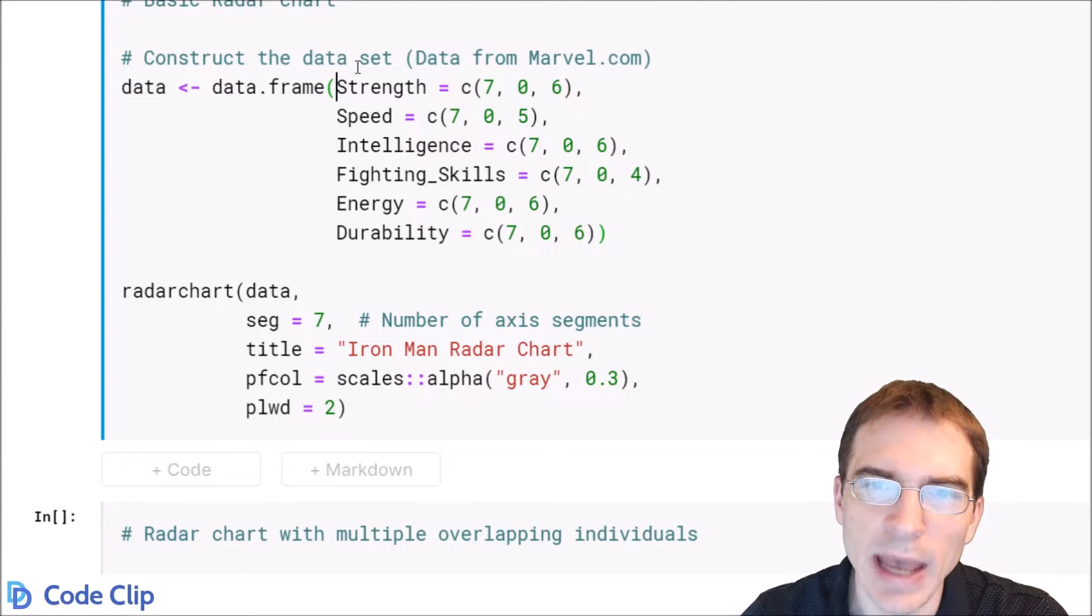So for each column you first actually have to enter the maximum and then minimum values that you want for that statistic, and then you enter the actual value that's going to be associated with the character.